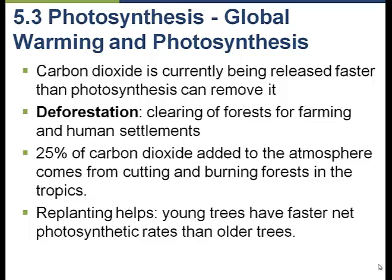The final thing we want to discuss in this chapter is the impact that man is having on the carbon cycle and how that ties into photosynthesis, the discussion that we just completed. Plants are continually removing CO2 from the atmosphere and storing large amounts of it in their bodies, in their biomass, and therefore sequestering CO2.